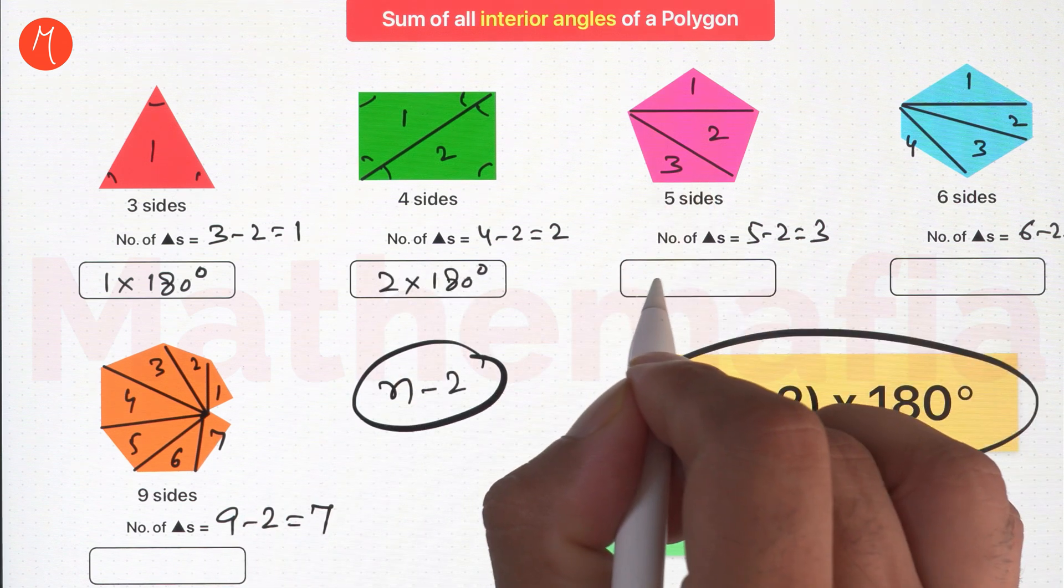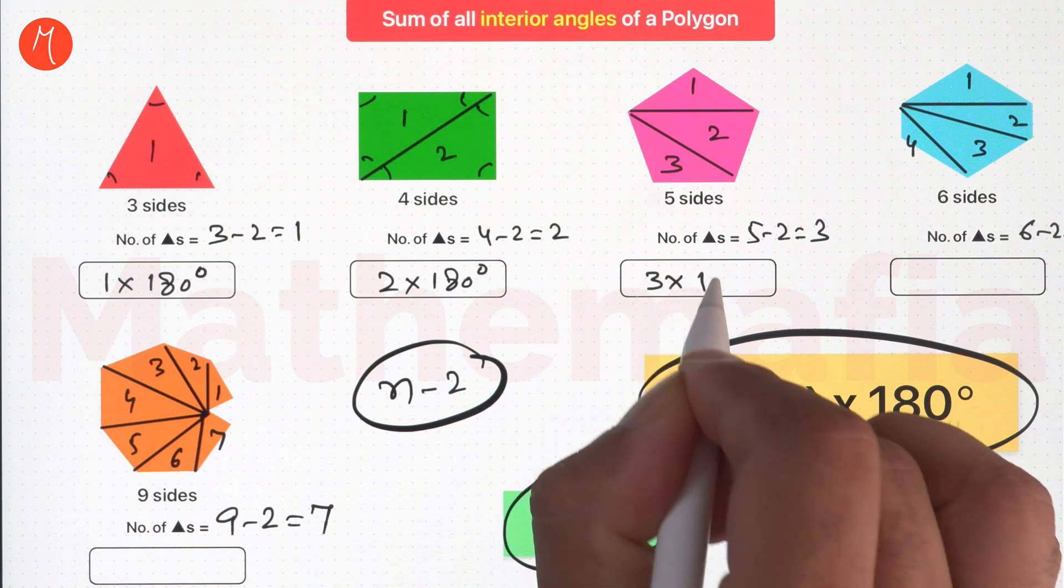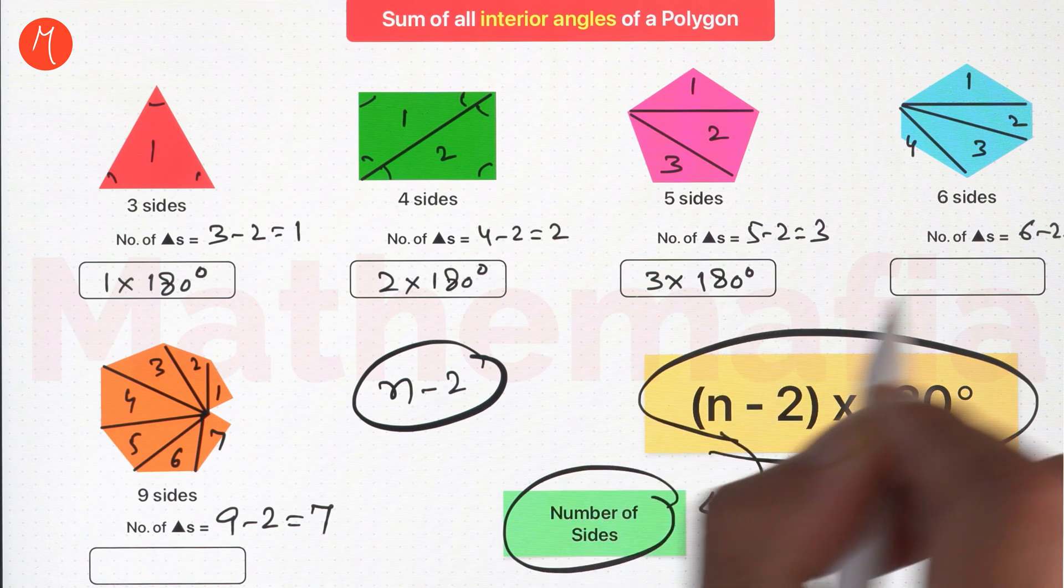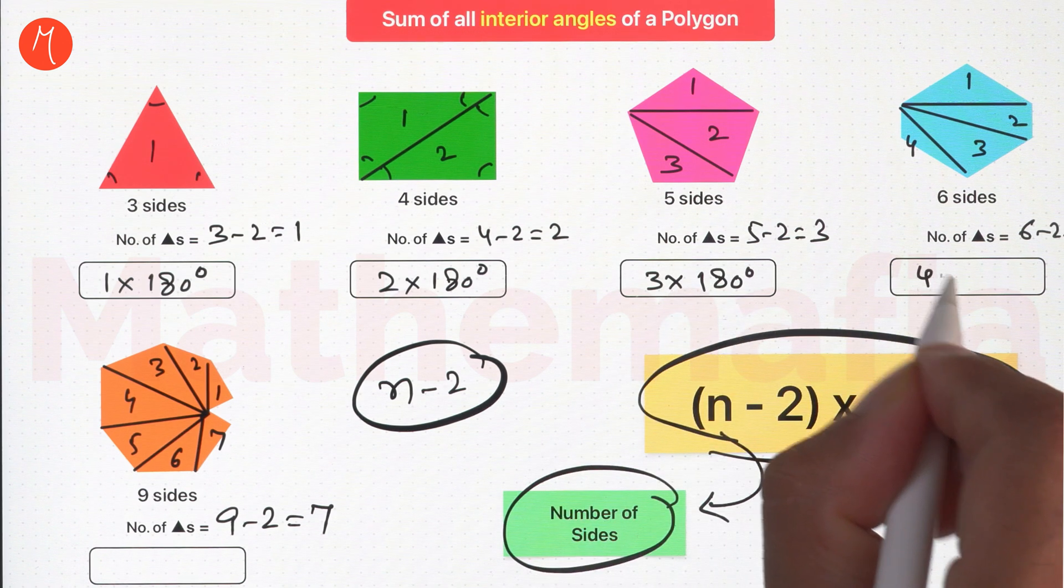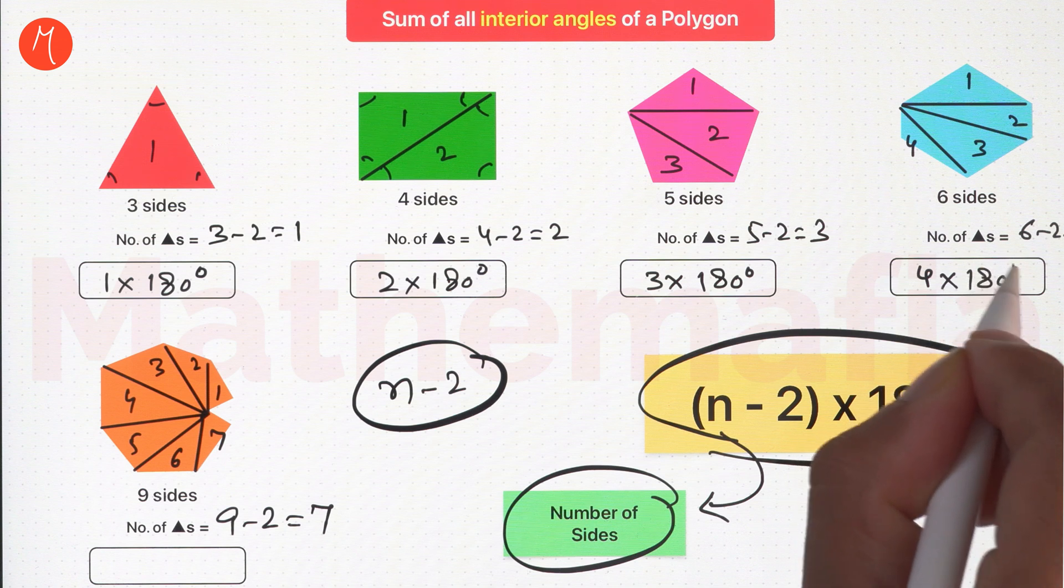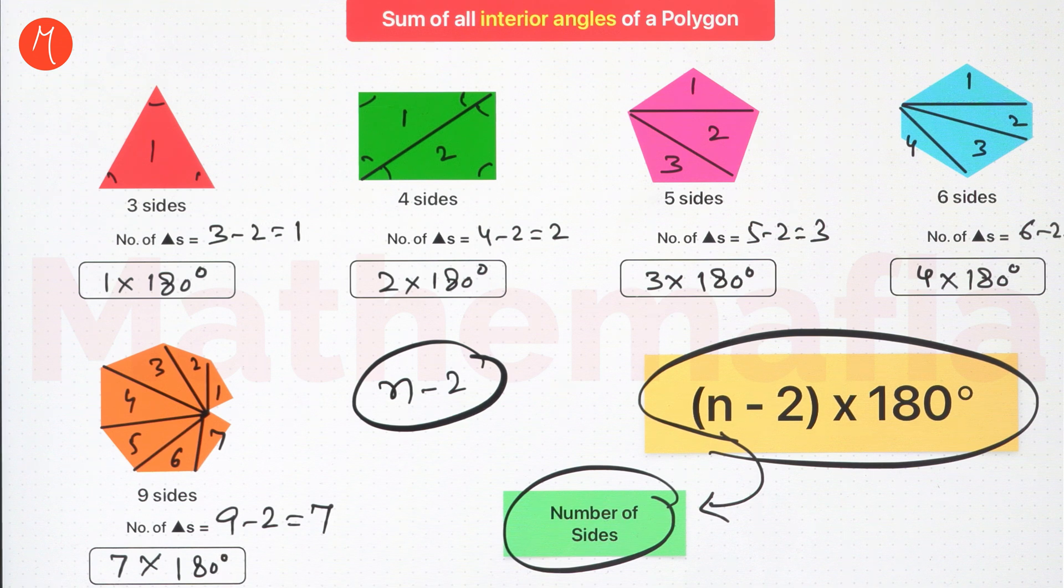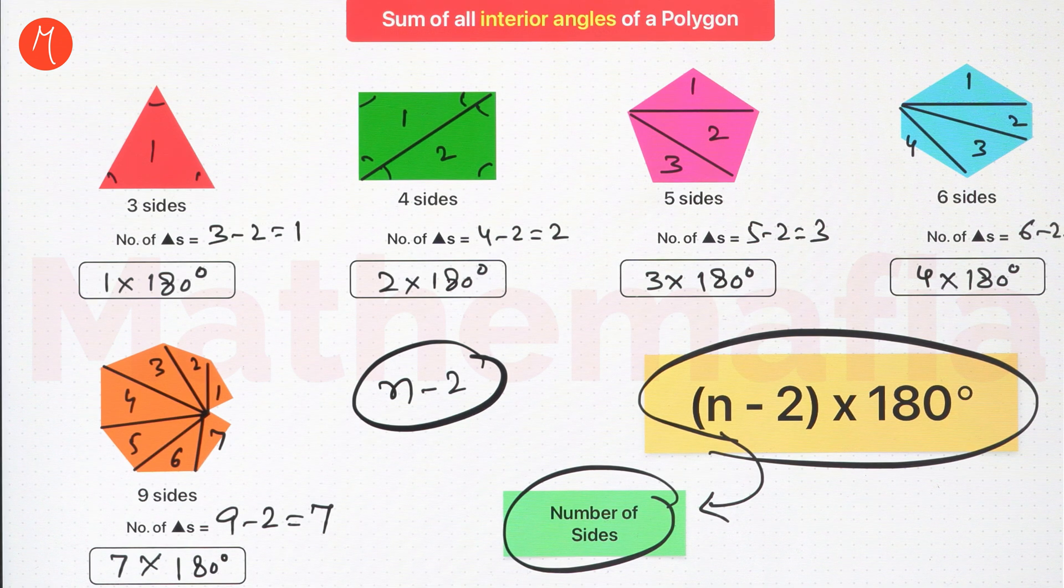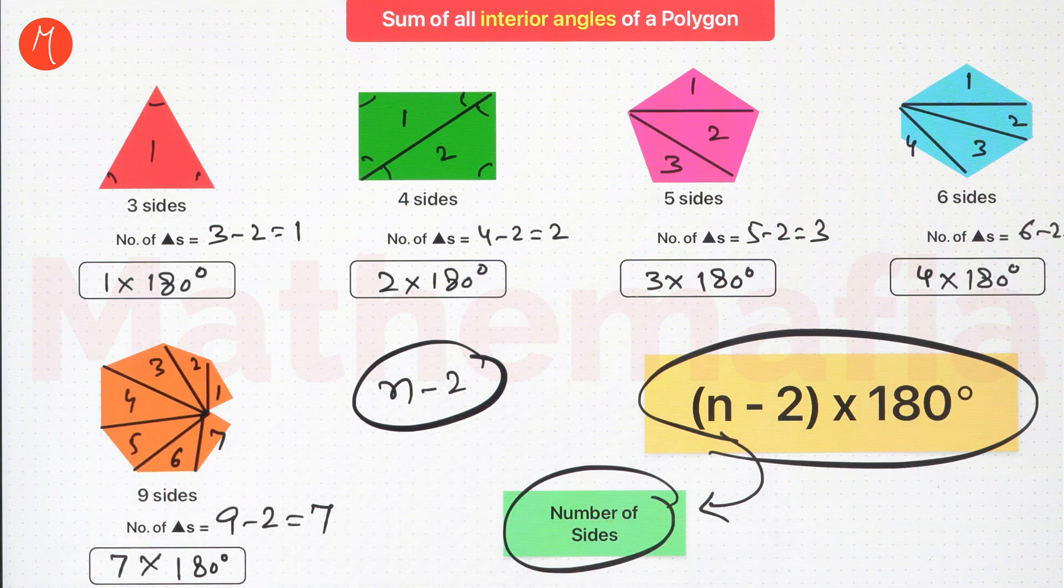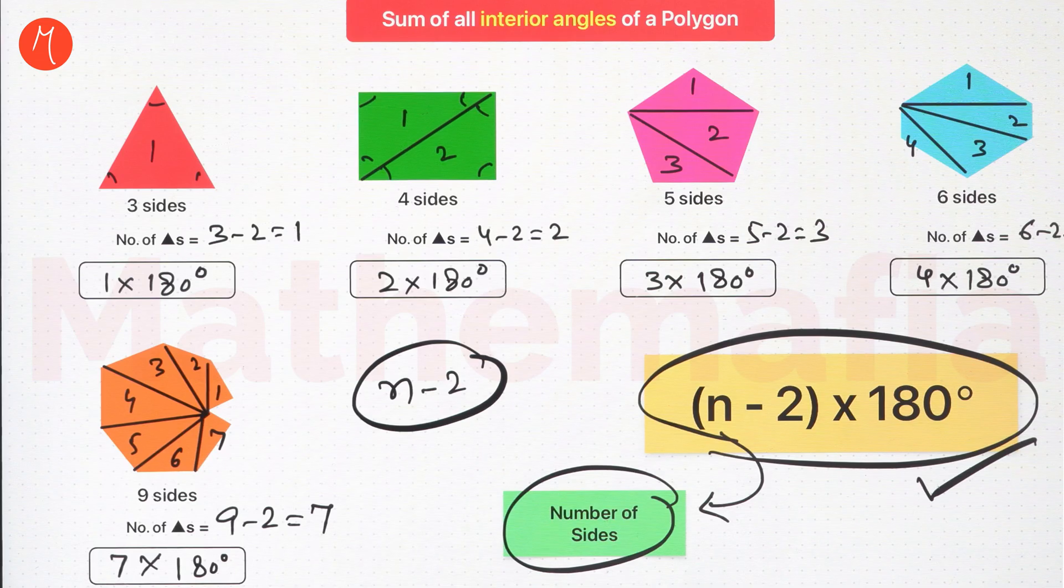Similarly for this, it will be 3 into 180 degrees. 4 into 180 degrees for hexagon. And it will be 7 into 180 degrees for this nine-sided polygon. So we can observe that the sum of all interior angles of an n-sided polygon is always equal to n minus two into 180 degrees.